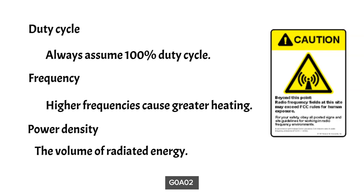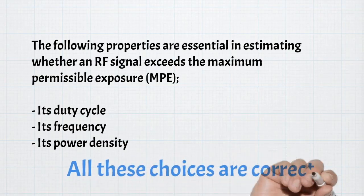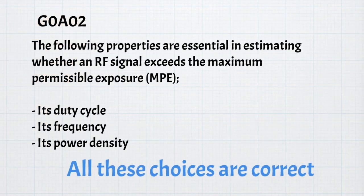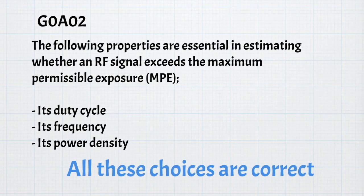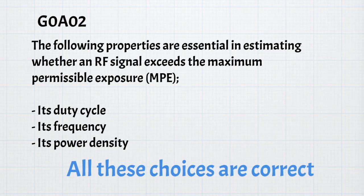The same is true for the energy coming out of your radio. For the exam, we need to know that the following properties are essential in estimating whether an RF signal exceeds the maximum permissible exposure, or MPE: it's duty cycle, it's frequency, and it's power density. On the exam, you'll mark the correct answer, which is all these choices are correct.